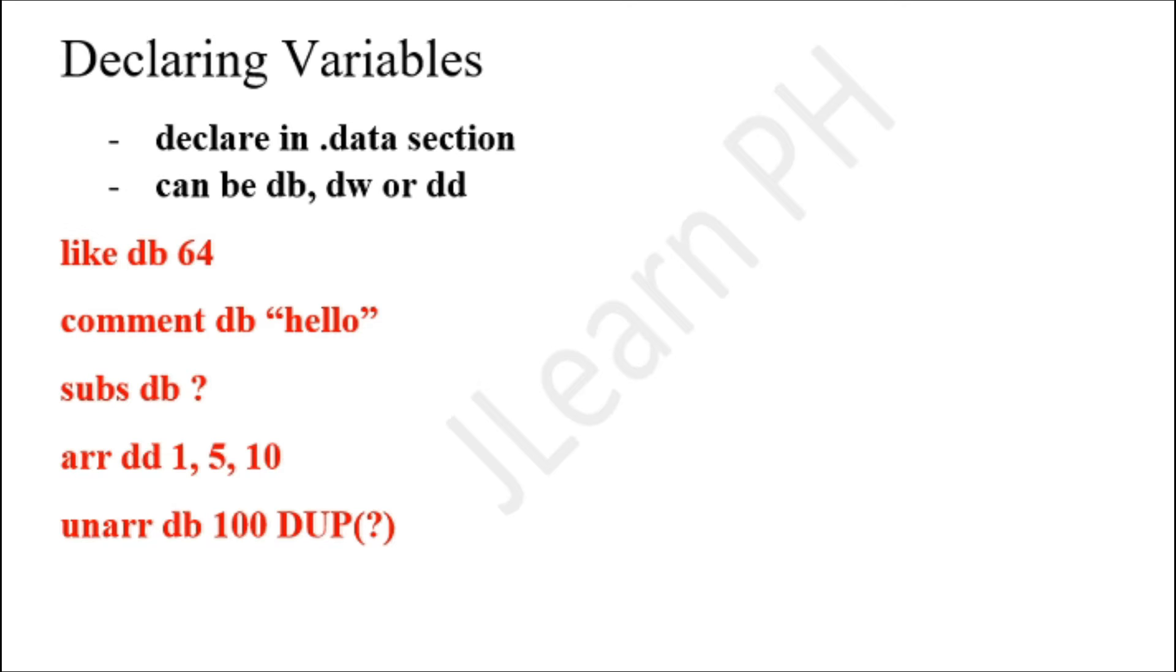'comment db "hello"' declares six bytes starting at the address 'comment' and initializes the value to hello. 'subs db ?' basically declares a byte that is uninitialized, meaning there is no value to it, and it is called subs.